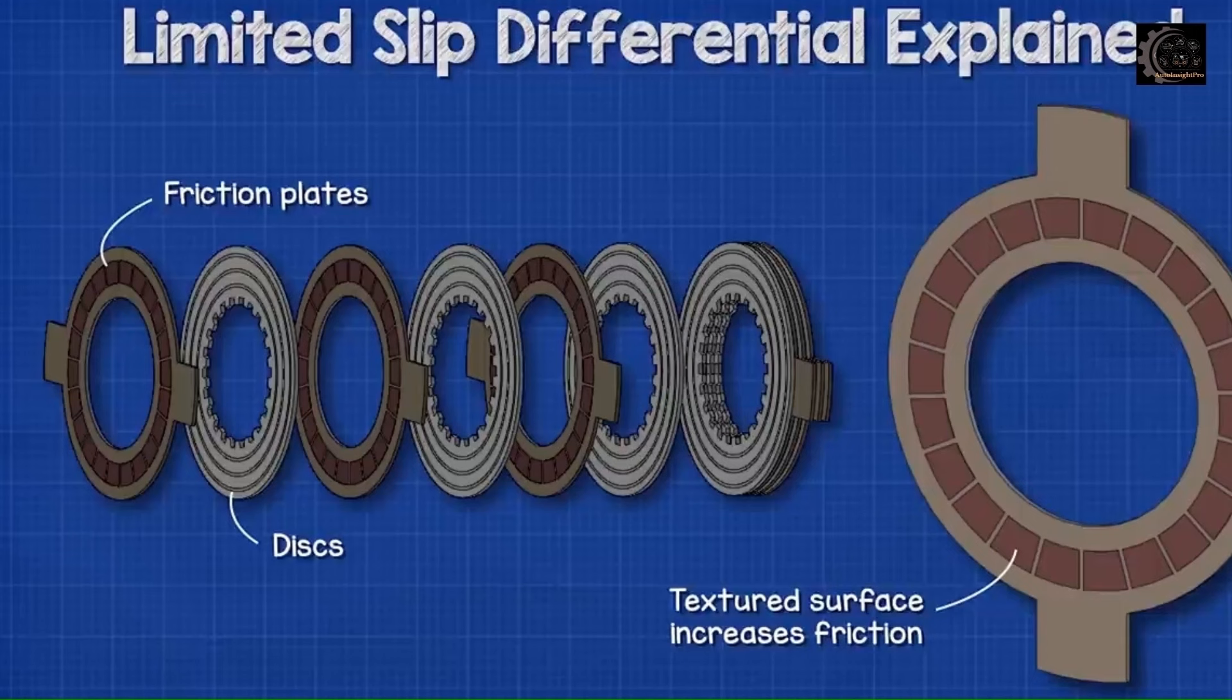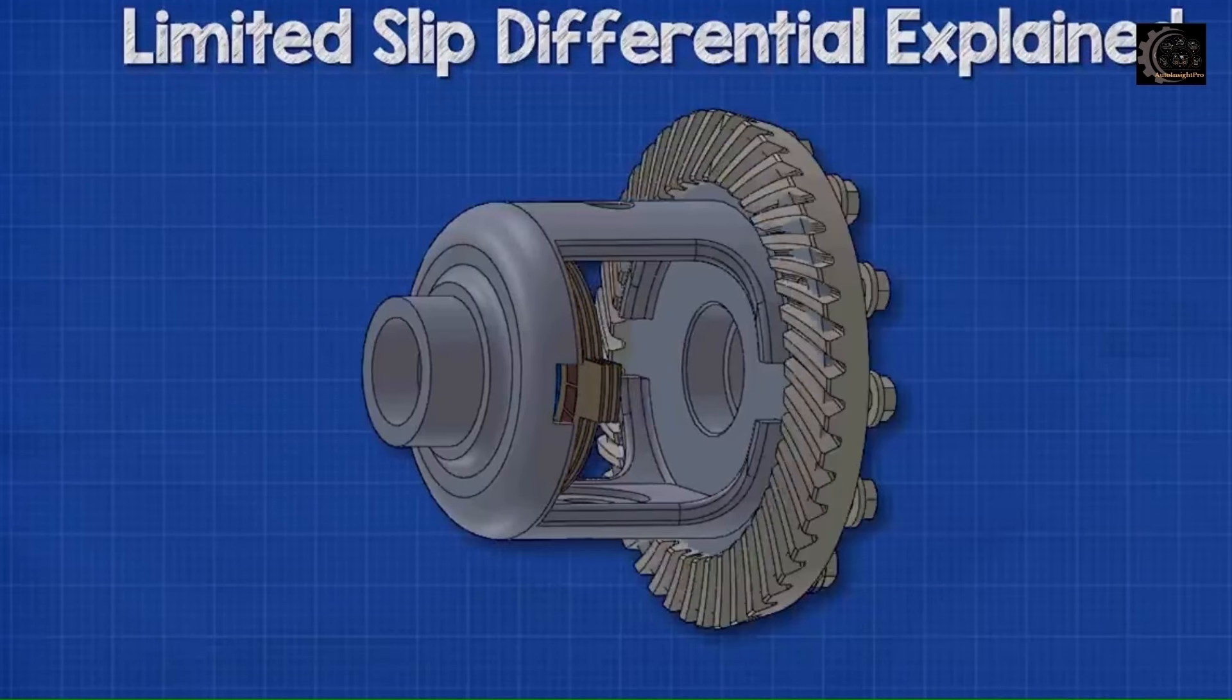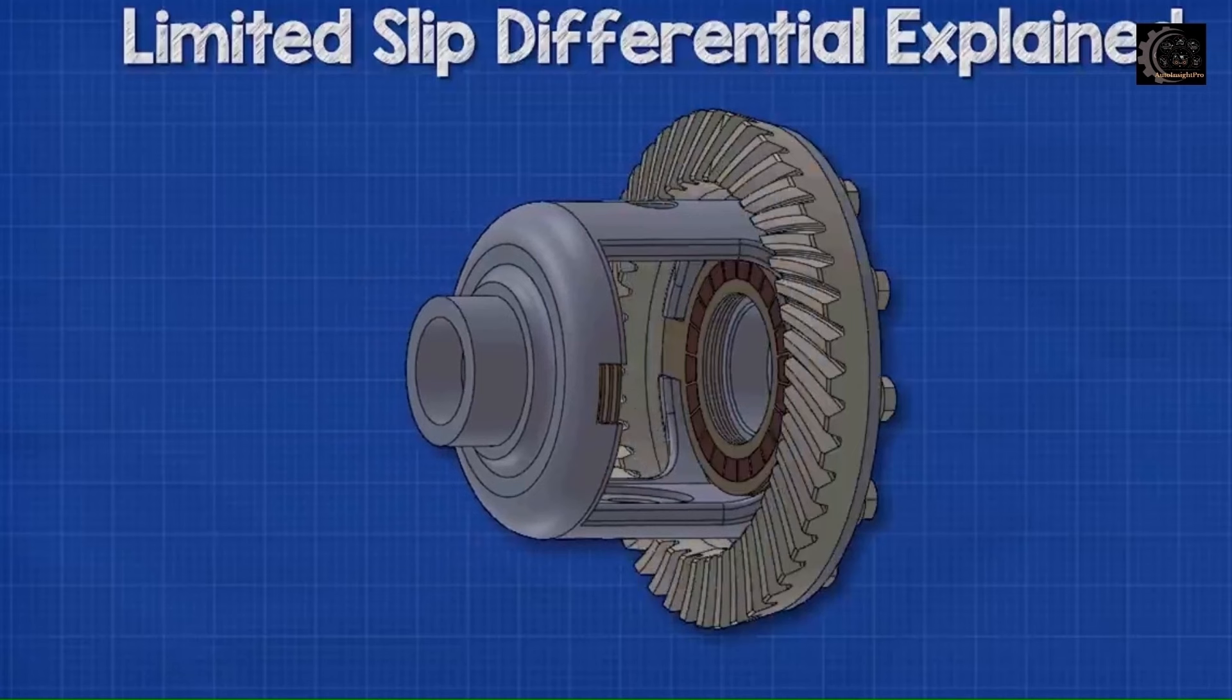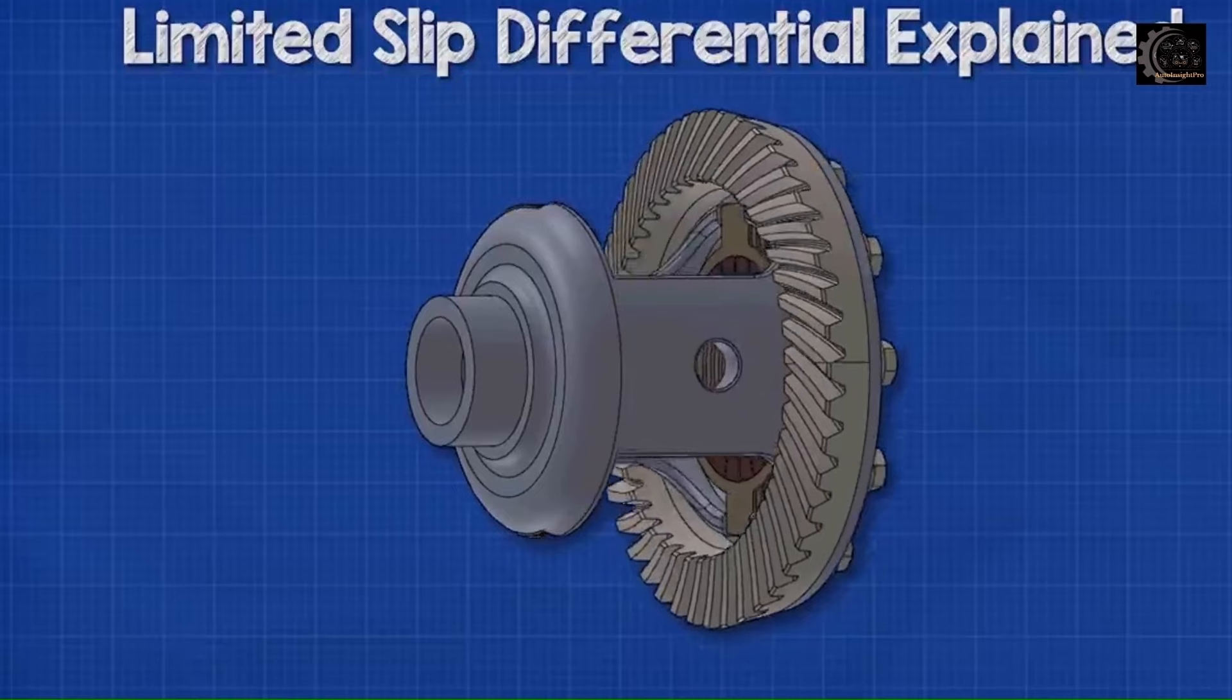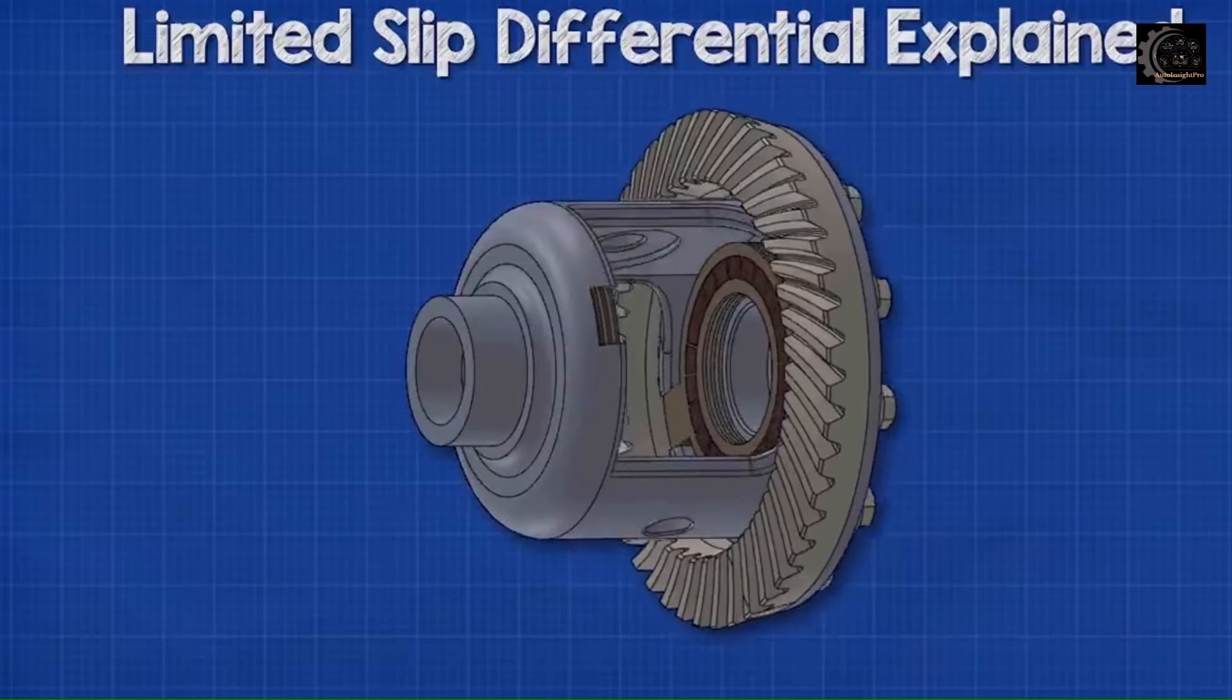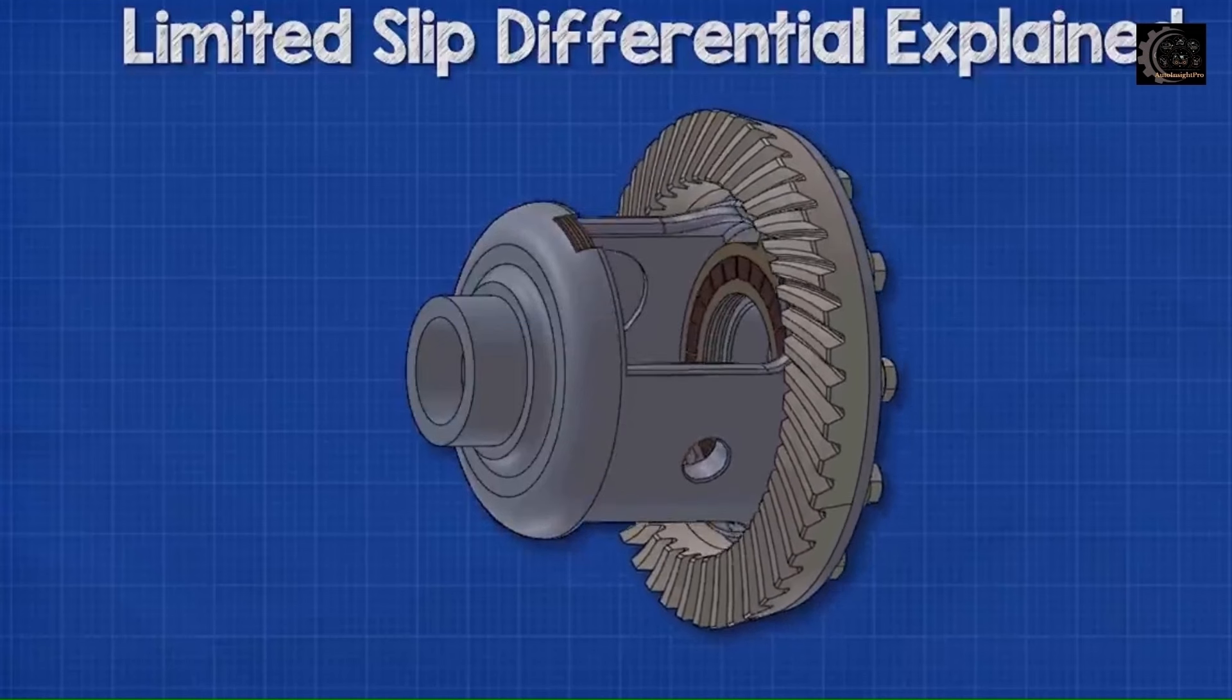We have the clutch friction plates and the clutch discs. The clutch friction plates have a special textured surface which increases friction. Part of the disc extends outwards. This will slot into the grooves of the differential case. When the ring gear rotates, it rotates the casing and so the clutch friction plates will also rotate.